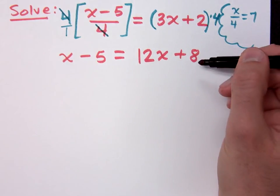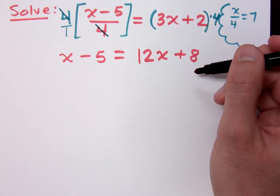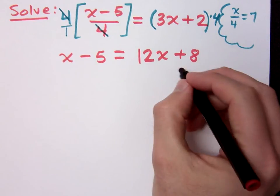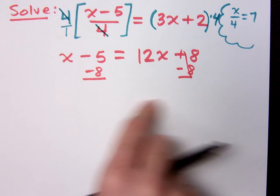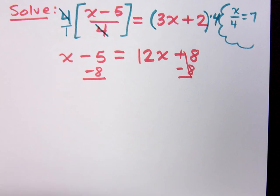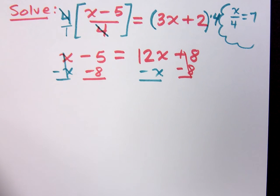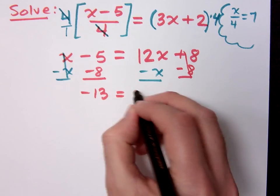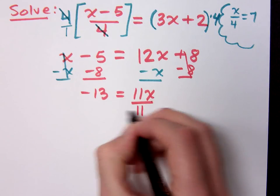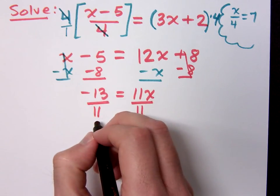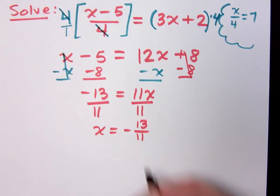Now that I have this, this is an equation you know how to solve. What would you do? Move the 8 over — so subtract 8. If the constants go to the left, where do the variables go? To the right. So subtract the x. Now what do I have? Negative 13 equals 11x. Finish solving this — you always divide by the coefficient of x. So what does x equal? Negative 13 over 11.